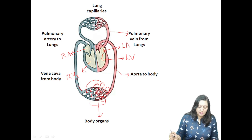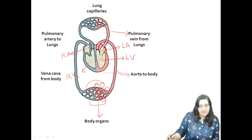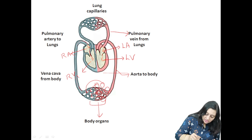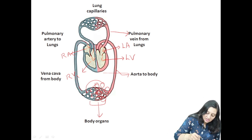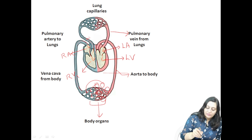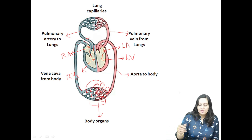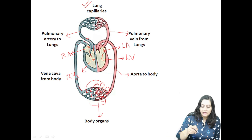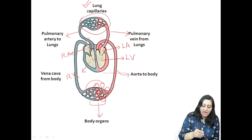The vena cava is the largest vein of the body. This vena cava brings the deoxygenated blood, which is carrying carbon dioxide, to the right atrium. From the right atrium, it comes down to the right ventricle. From the right ventricle, this deoxygenated blood enters the pulmonary artery, which carries this blood to the lungs. The lungs are the actual place where gaseous exchange takes place. So this blood is carried to the lungs for oxygenation via the pulmonary artery.